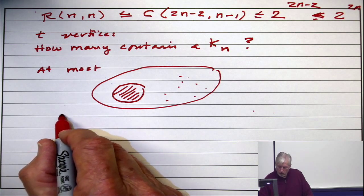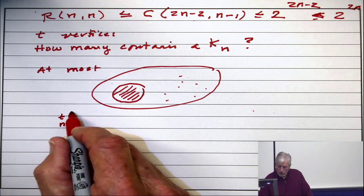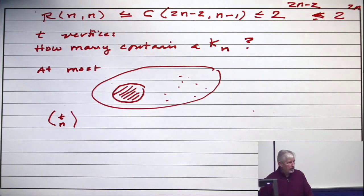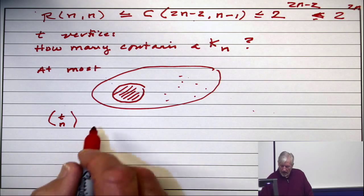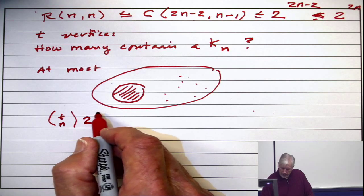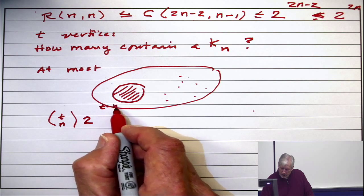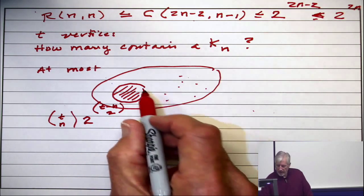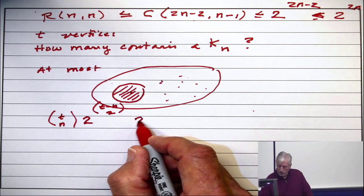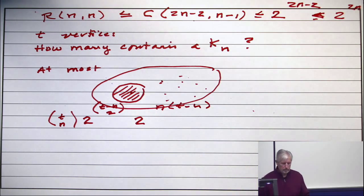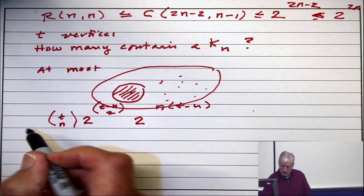So at most, T choose n, choose the n that are going to be the clique, then you will take all the edges in there, and then for each pair out here you can do anything you want. T to the 2 to the T minus n choose 2. And then from here to here you can do anything you want. 2 to the n times T minus n. So that's an upper bound. At most this many.